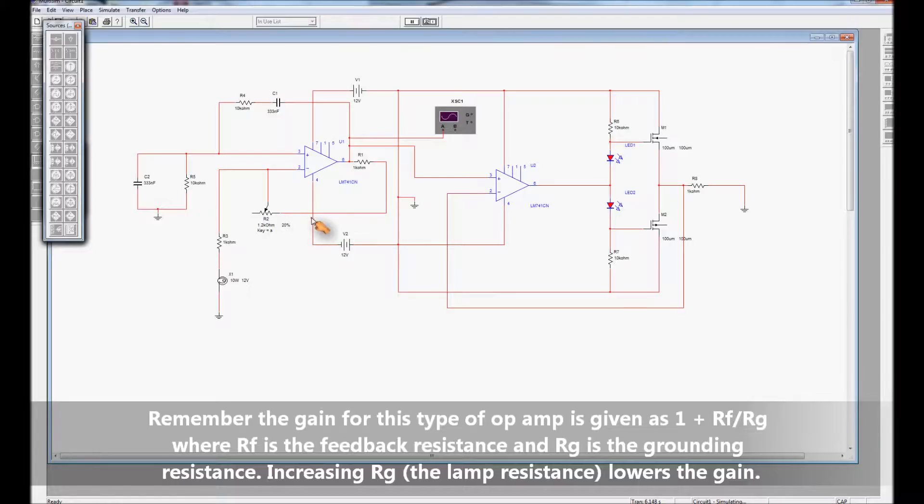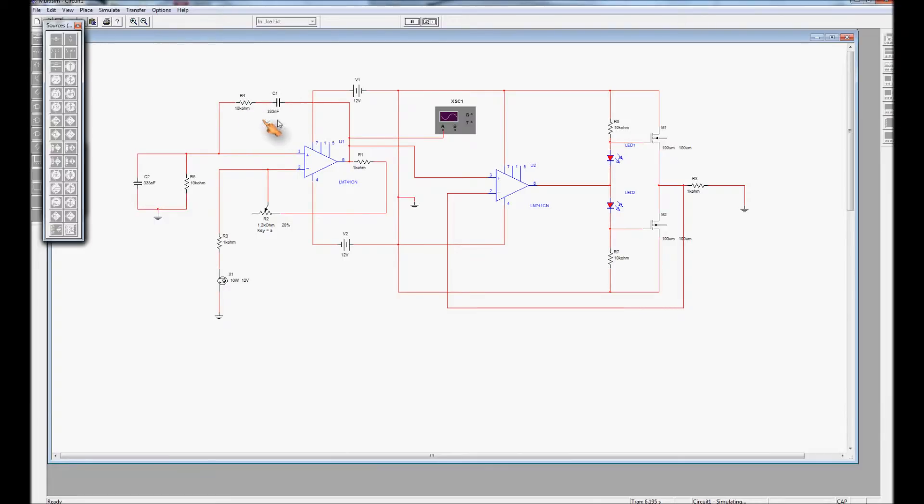The other part of the circuit is the two networks here. We've got two RC networks. One is a series RC network and the other one is a parallel RC network. And effectively they work together with the gain network to produce oscillations. And you can find those oscillations always at 1 over 2 pi times R times C.